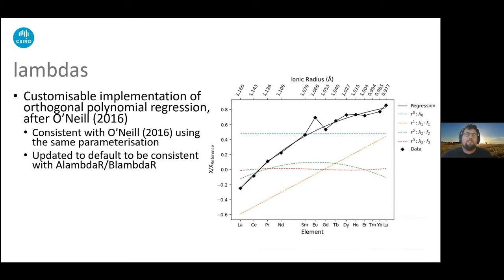As this is a session on rare earths, I've also been working on lambdas for the past two years or so. In a simple sense to start with, and going a little bit more customizable since, adding tetrads and anomalies and this type of thing. The lambdas implementation in Pyrolite is fairly comparable to the things Michael showed you earlier. It's a customizable implementation of what Hugh O'Neill did back in 2016. You can change the parameterization a little bit more flexibly, just in case your data set looks a bit different. Generally we've tested it and it's consistent with what Hugh did originally, but it's been updated to be consistent with Michael's two apps. So if you calculate lambdas in Pyrolite, they should be the same as lambdas as you calculate in the apps.